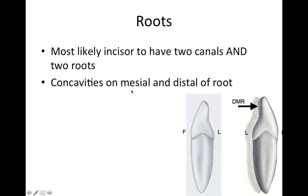Let's take a look at the roots. This is the tooth that's most likely incisor to have two canals and two roots — that's important, the 'and' in there. If it was just two canals, we might think about the mandibular centrals. But two canals and two roots — it's going to be the mandibular lateral. And there are concavities on the mesial and distal of the roots; you can see that little concavity right there.